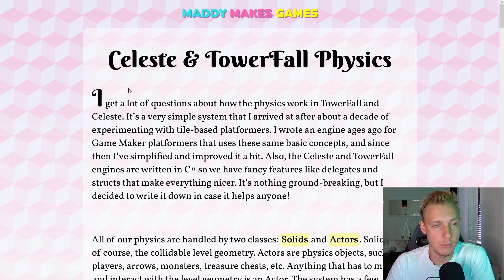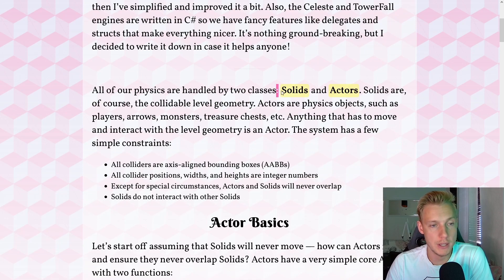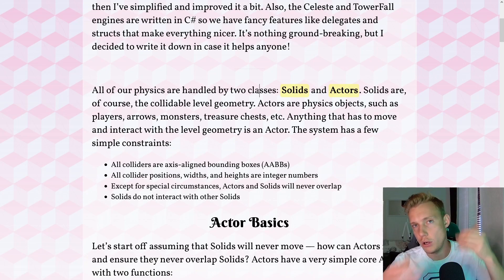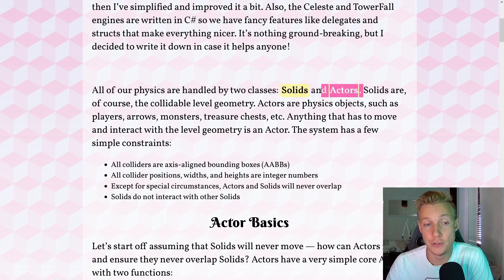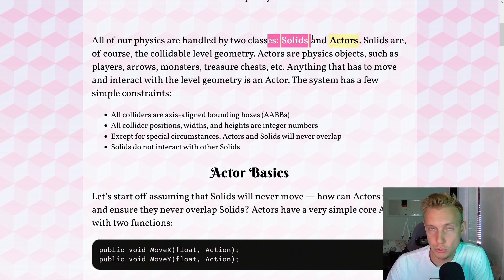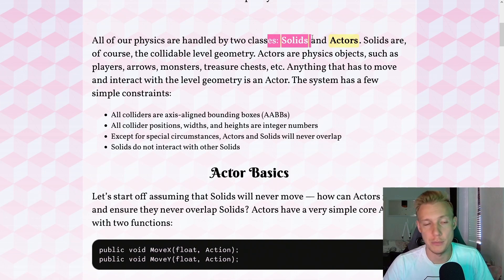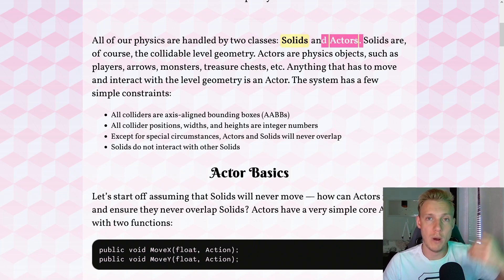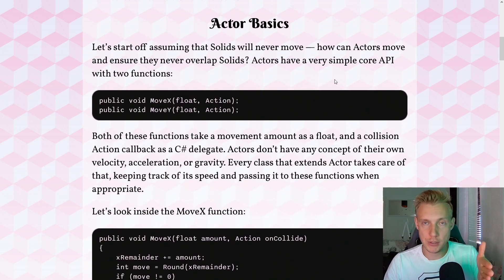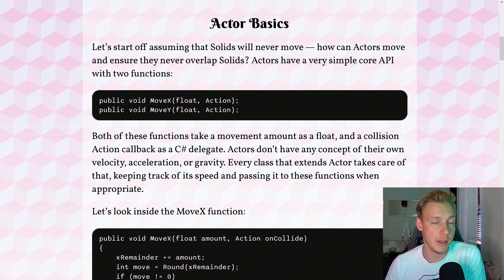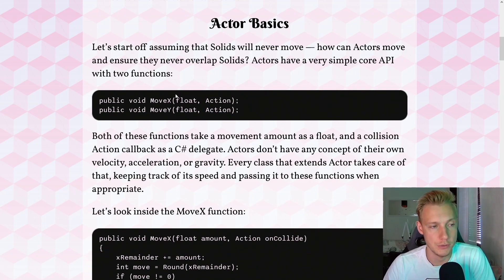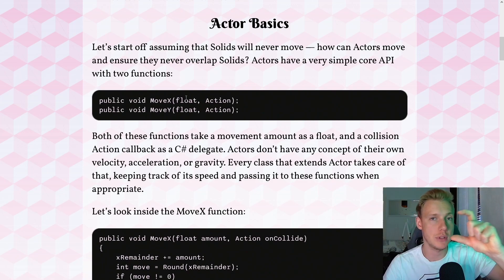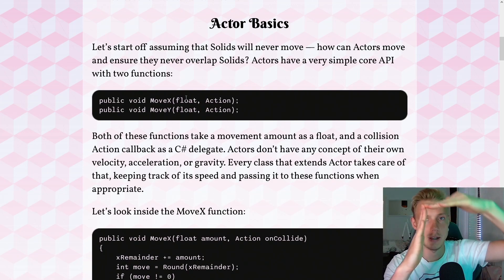There's a great article by Maddy Thorsen, one of the developers of Celeste, covering solids and actors. A solid is a wall or tile; an actor is our character. Solids can always move, and actors move one pixel at a time, checking for collision each pixel. This keeps collision simple, pixel-perfect, and uses axis-aligned bounding boxes — a rectangle around the player that is not rotated.